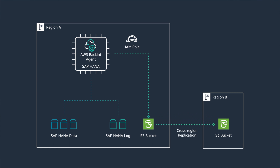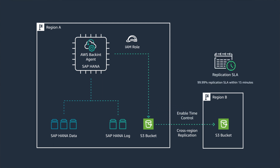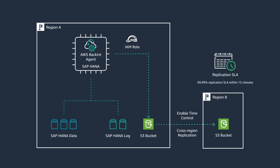This ensures that your critical SAP HANA backups are available in the event of a disaster. And with the replication time control feature, we get a 99.99% SLA that your objects will be replicated to the secondary bucket within 15 minutes.